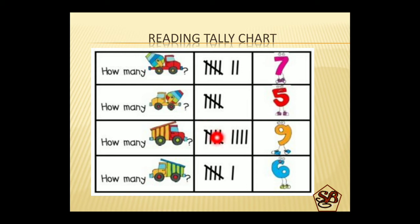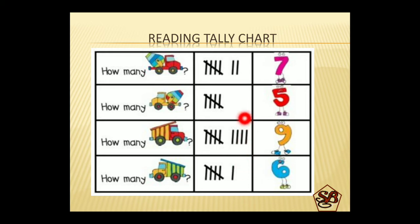5 only. 5 plus 4 is 9. 5 plus 1 is 6. So 6 is represented like this, 9 like this, 5 like this, and 7 like this in tally charts. Similarly, by grouping the numbers in groups of 5s and the single digits, we can form any number.